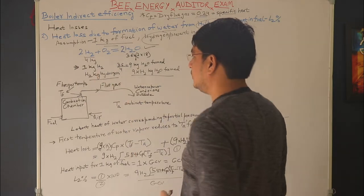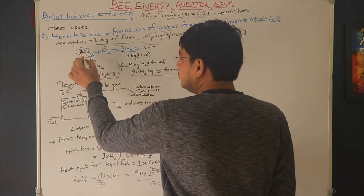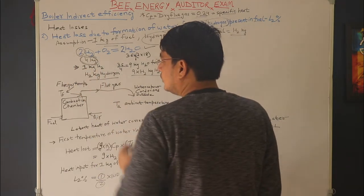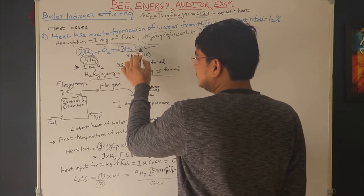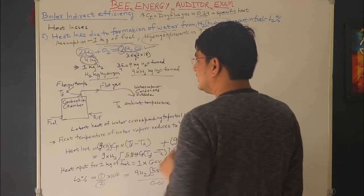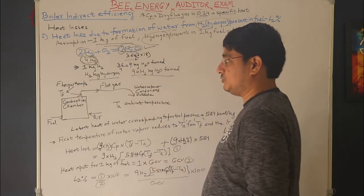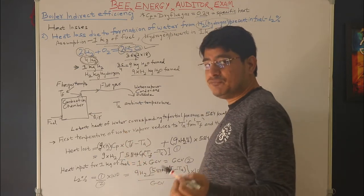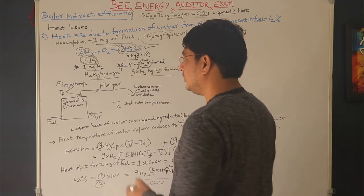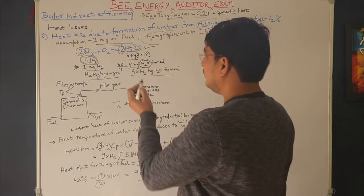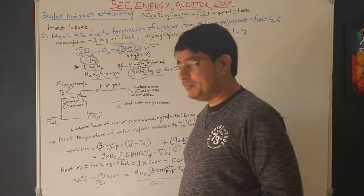From the balanced equation, the atomic weight of H₂ is 2×1 = 2 kg per molecule, so 4 kg total hydrogen burns to form 36 kg of water (2×H₂O = 2×18). Therefore, from 1 kg of hydrogen, 36/4 = 9 kg of water is formed. If the fuel contains H₂ kg of hydrogen per kg of fuel, then 9 × H₂ kg of water will be formed.